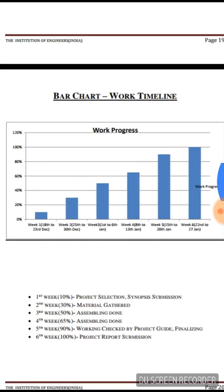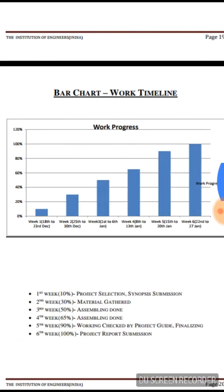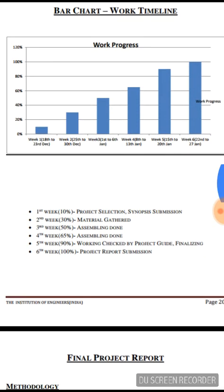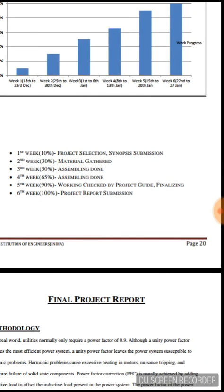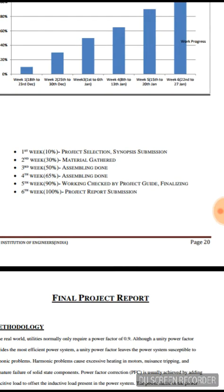The bar chart is the most important part, showing what work was done at what interval of time with the guidance of the project guide. In the first week, 10% of the work was completed: project selection, synopsis submission, etc. In the second week, 30% of the total work was done — material gathering, what materials were required for making this project. In the third week, almost 50% of the work was completed — assembling done, all required components assembled.